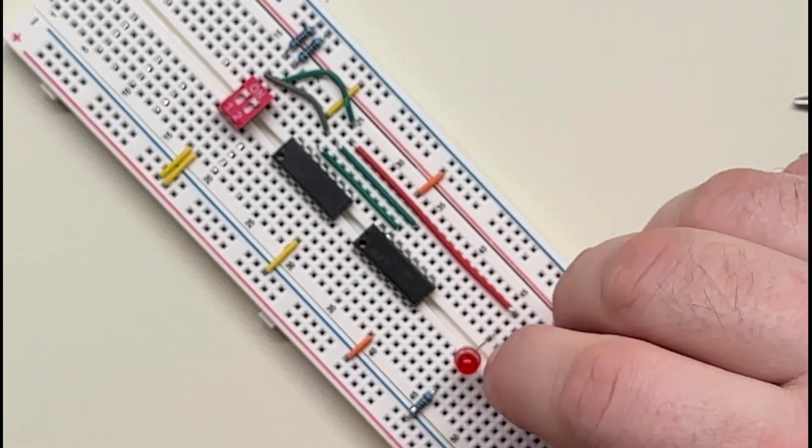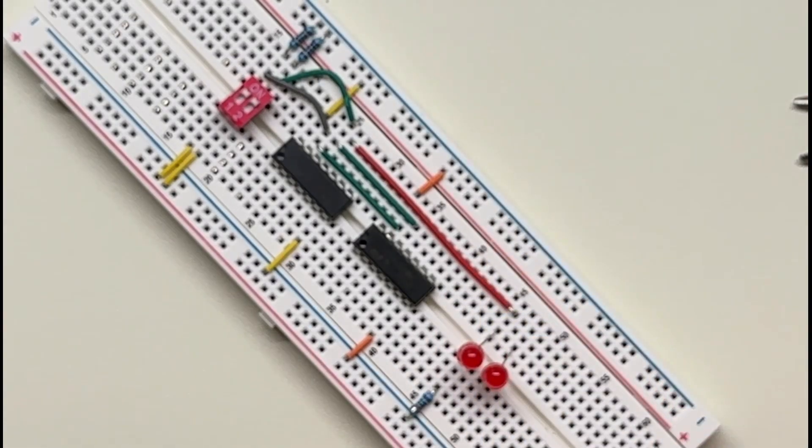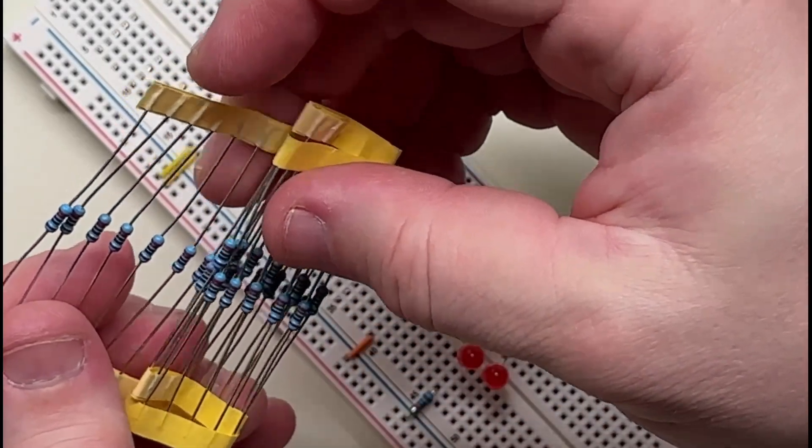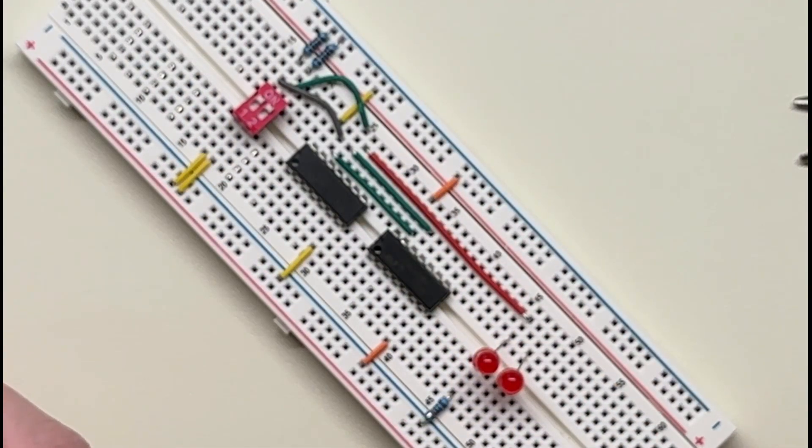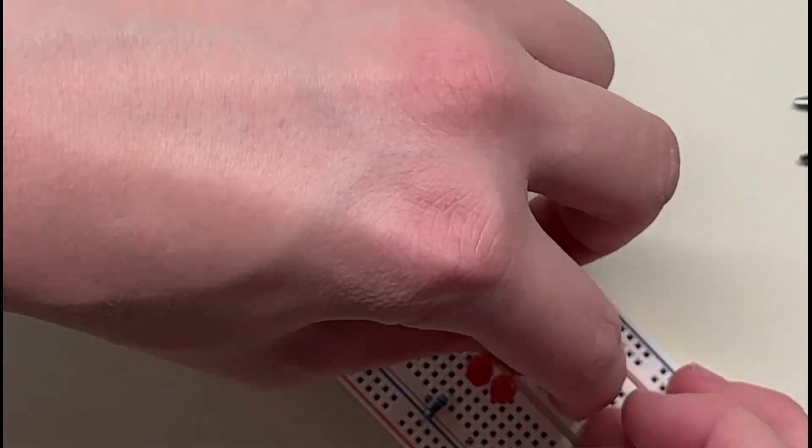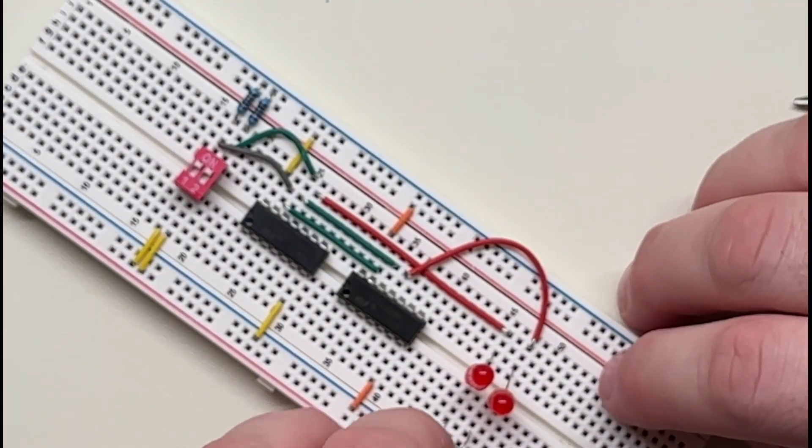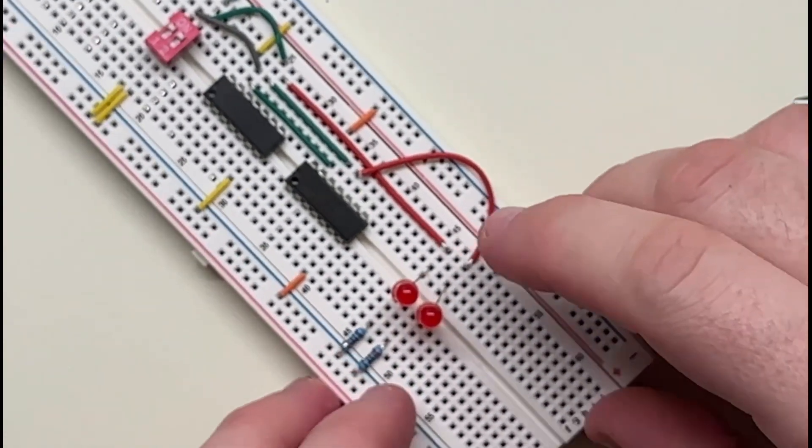I guess we'll just do maybe skip a space, and we'll need another resistor, another 220 resistor. We've got them right here. Okay, while I cut this, you hook up the output to the LED. Okay. All right, that's hooked up.